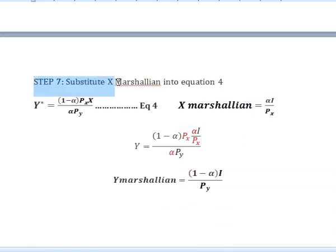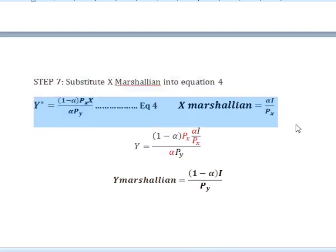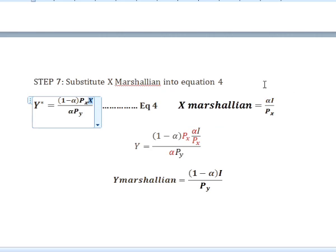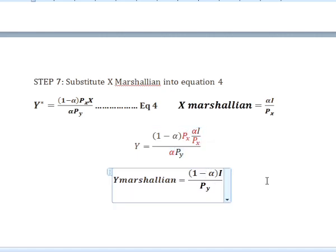The next step, we substitute x-star into equation 4. We rewrite the equation, and since y equals 1 minus alpha times the relevant terms, we solve through and get y-star.